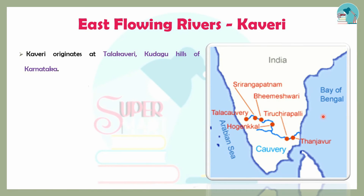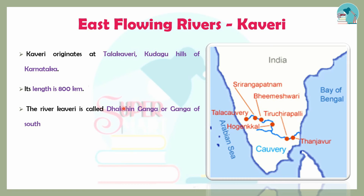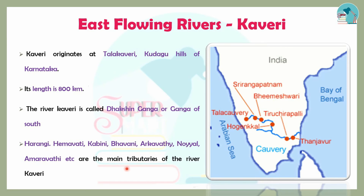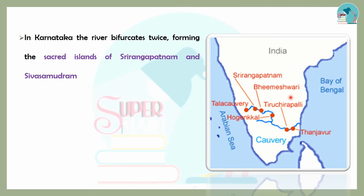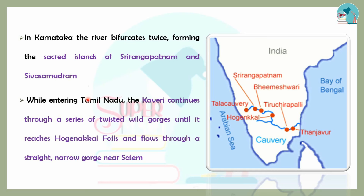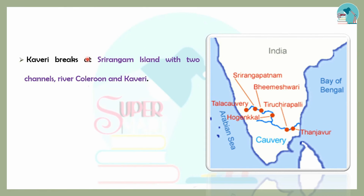Next is the Kaveri River. Kaveri originates in Karnataka from the Kodagu Hills. Its length is 800 km. It is also called Dakshina Ganga or the Ganga of the South. Its main tributaries are Harangi, Hemavathi, Kabini, Bhavani, Arkavathi, Lokapavani, and Amaravathi. In Karnataka, the river forms two scattered islands — Srirangapatna and Sivasamudram. The Kaveri forms a delta before draining into the Bay of Bengal.